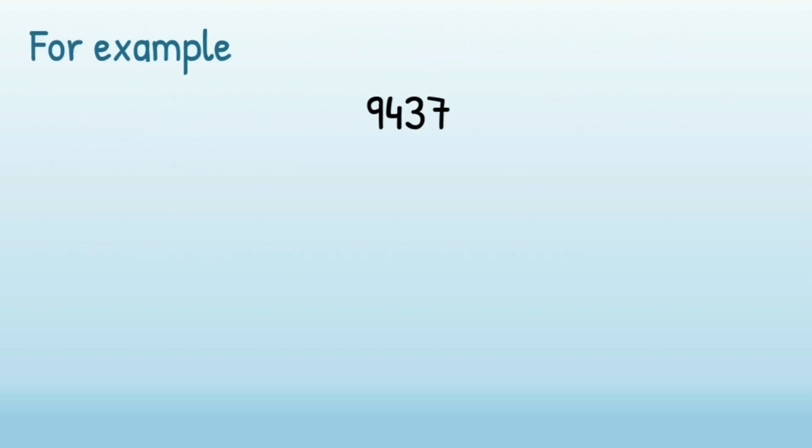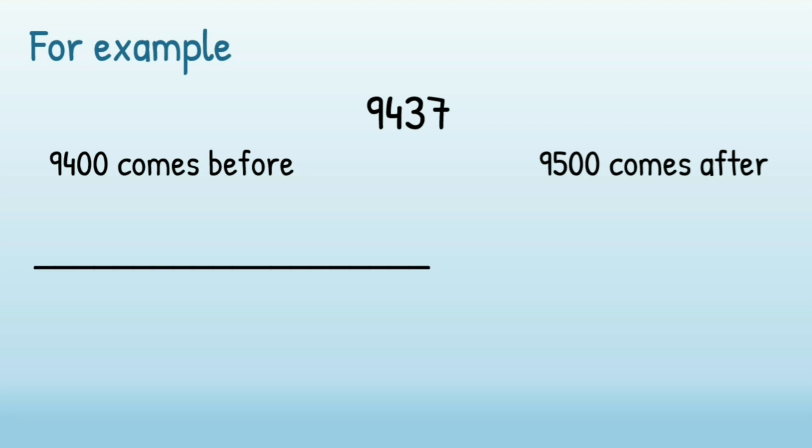For example, we could have 9,437. 9,400 comes before the number, 9,500 comes after the number. So let's have a look at that on a number line.